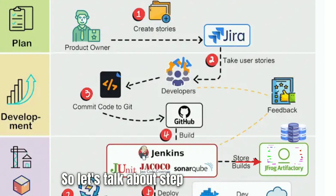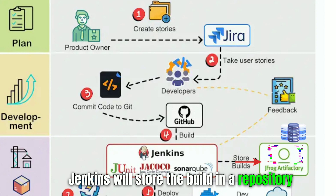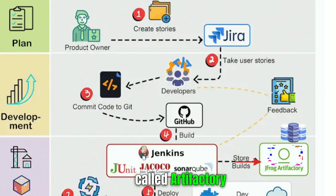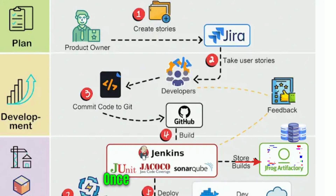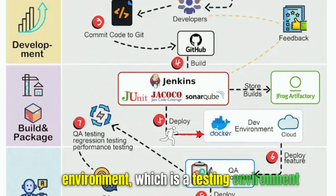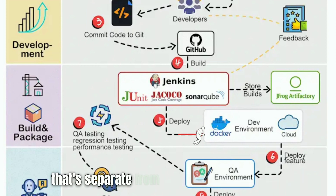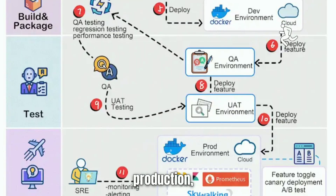In step five, when the build is successful, Jenkins will store the build in a repository called Artifactory. Artifactory is essentially a storage place for all the builds of the software. Once it's stored in Artifactory, Jenkins can deploy the build to the dev environment, which is a testing environment separate from the production environment. The dev environment is used to test the build safely before it's deployed to production.